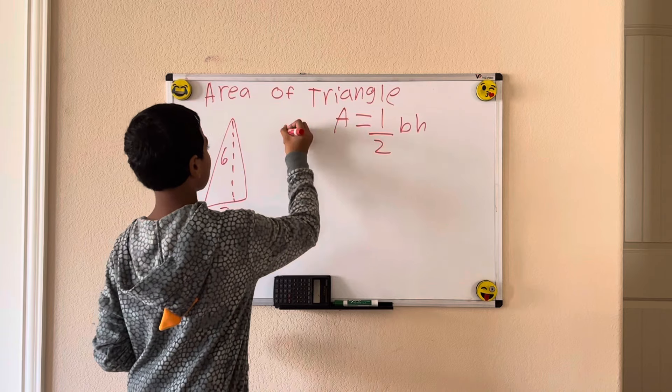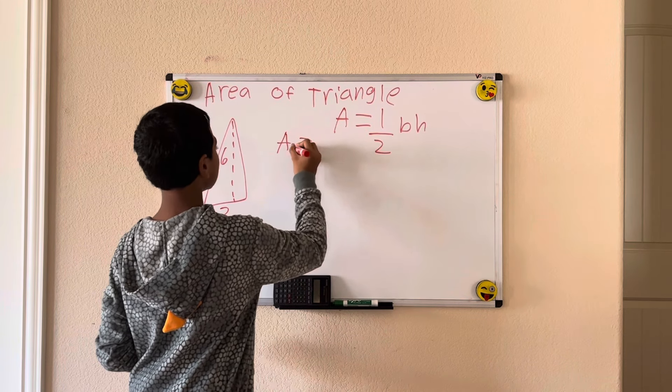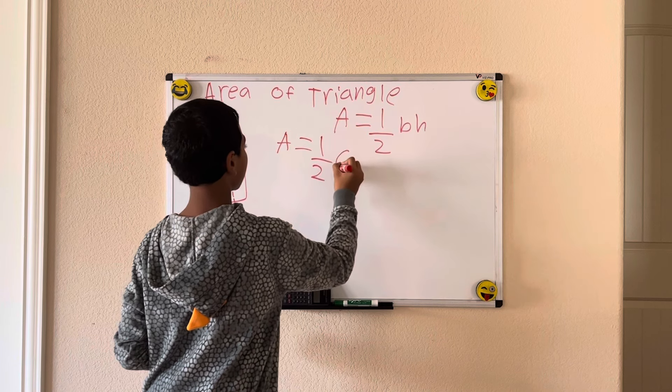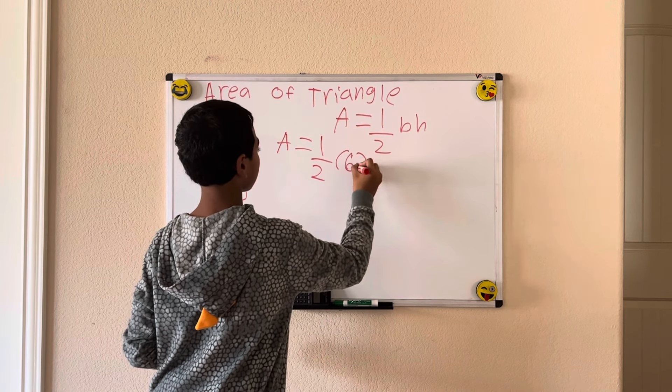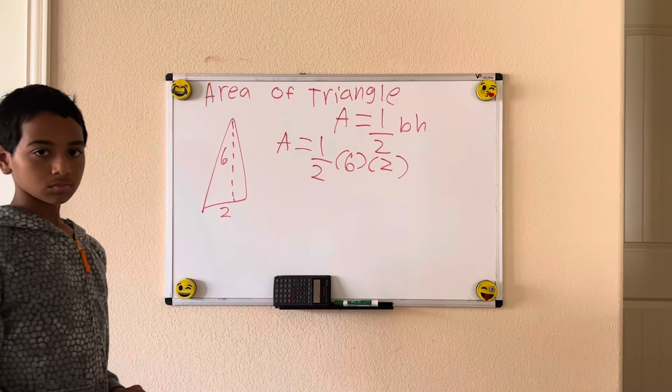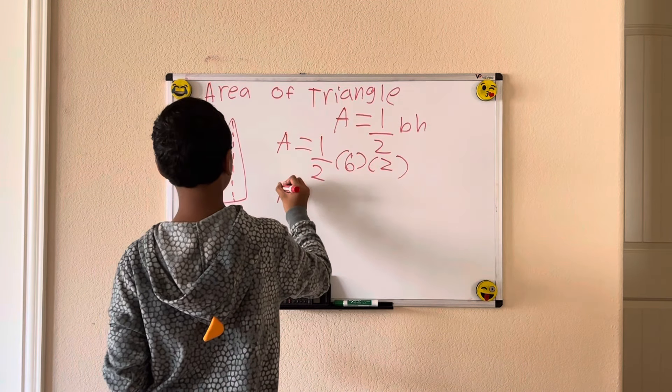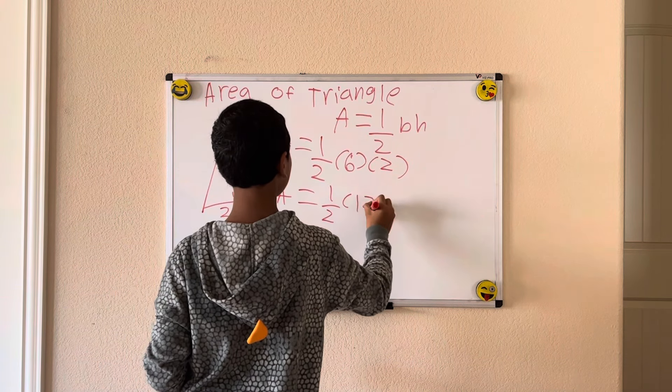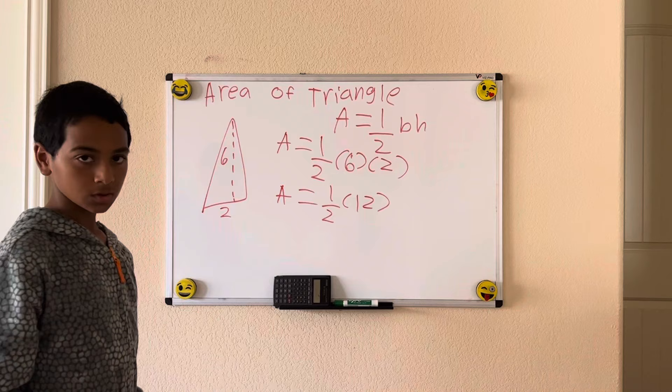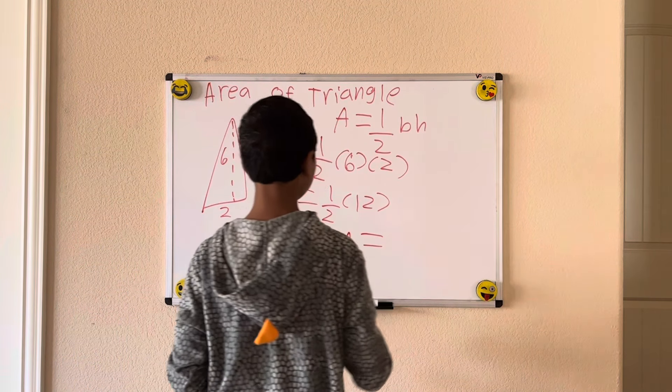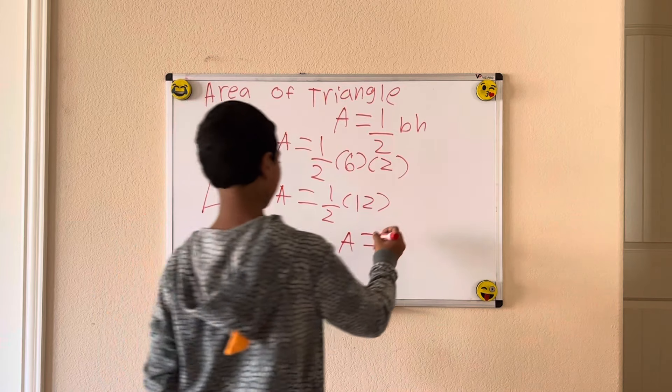We'll get area equals one-half times 6 times 2. Simplifying to area equals one-half times 12. That simplifies to area equals 6.